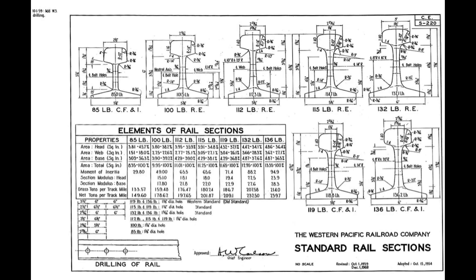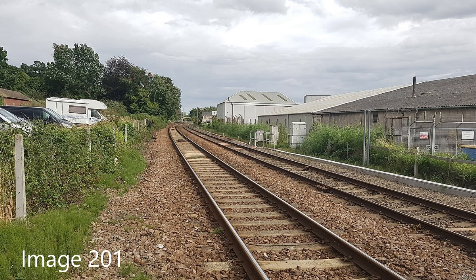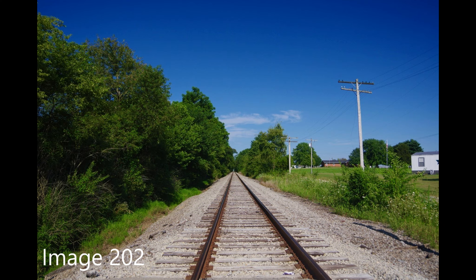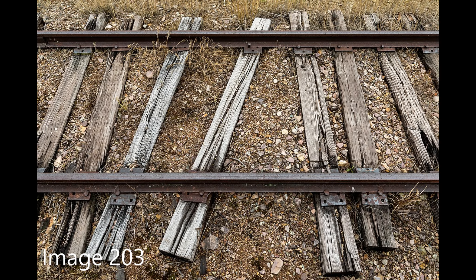Mainlines also use more closely spaced ties or sleepers. Spurs or sidings usually have lighter rail and ties set further apart. The lighter rail is introduced well past the mainline switch into the alternative trackage.